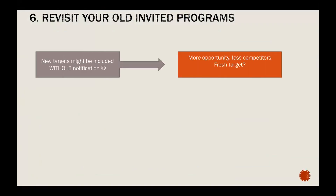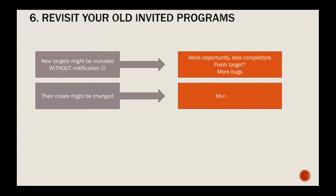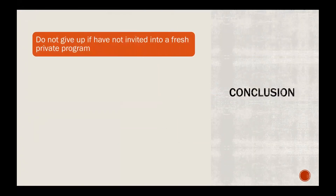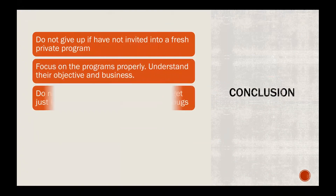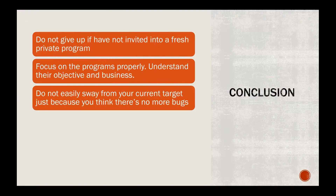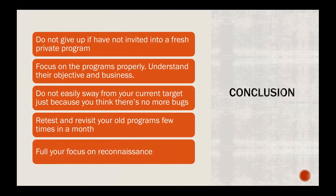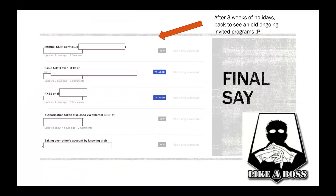So revisit your old invited programs because they usually have new targets with update notifications, their code might have changed, and code changes might re-trigger or re-introduce previously resolved issues. The conclusion is: do not give up if you haven't been invited into a fresh private program. Focus on programs properly, understand the objective and business, do not easily give up on your current targets just because you think there are no more bugs. Retest and revisit your old programs a few times a month — put your focus on reconnaissance.